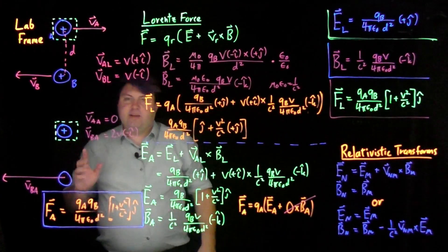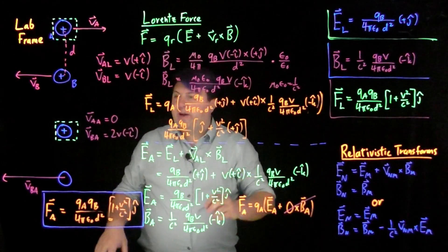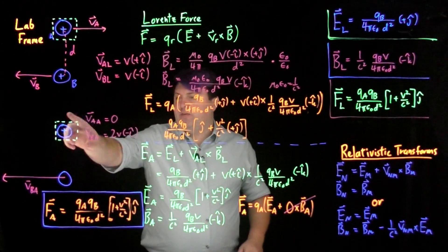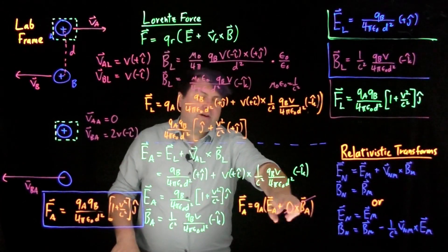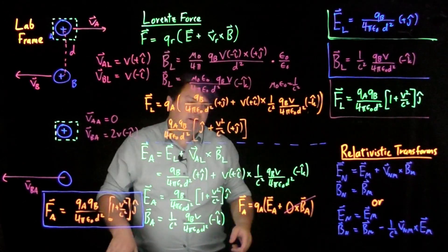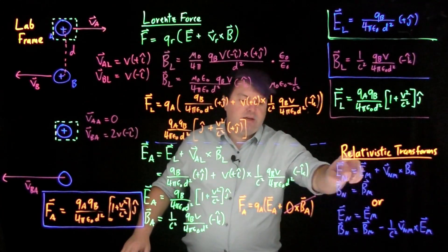In the next video, we'll look at a different reference frame in which this cross product is not zero, to show why the Lorentz force must be treated as either electric or magnetic and not both simultaneously.